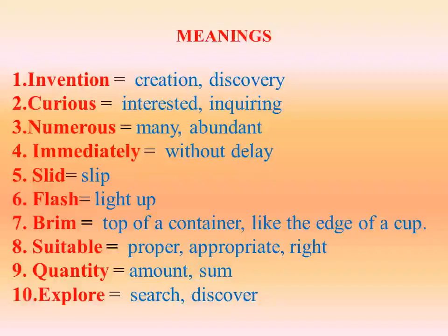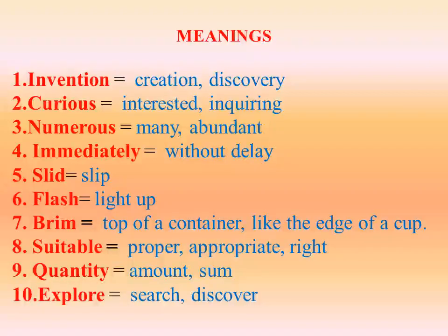Third one: numerous — means many, abundant. Fourth one: immediately — means without delay. Fifth one: sleep — means sleep. Sixth one: flash — means lighter. Seventh one: brim — top of a container, the line at the edge of a cup. Eighth one: suitable — means proper, appropriate, right. Ninth one: quantity — means amount. Tenth one: explore — means search or discover.